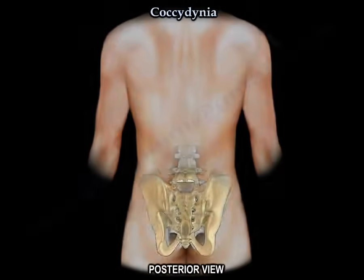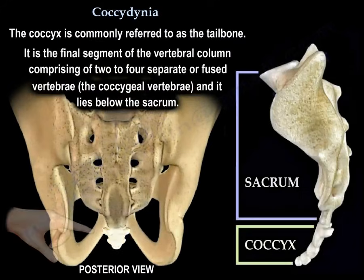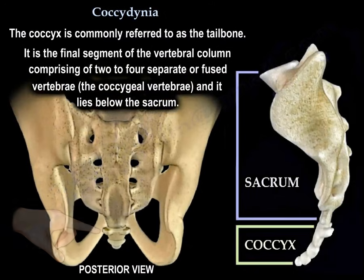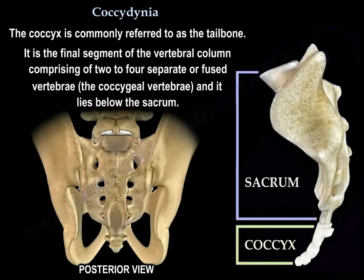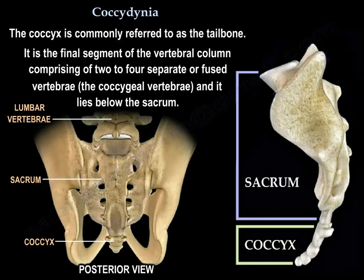Coccydynia. The coccyx is commonly referred to as the tailbone. It is the final segment of the vertebral column, comprising two to four separate or fused vertebrae called the coccygeal vertebrae, and it lies below the sacrum.